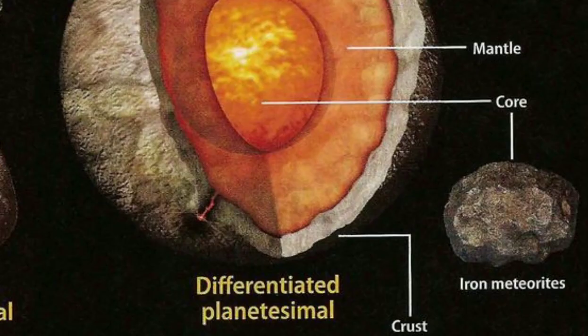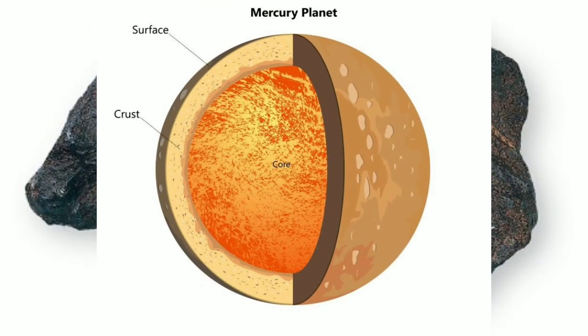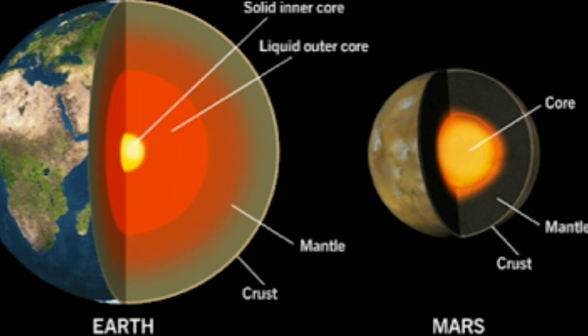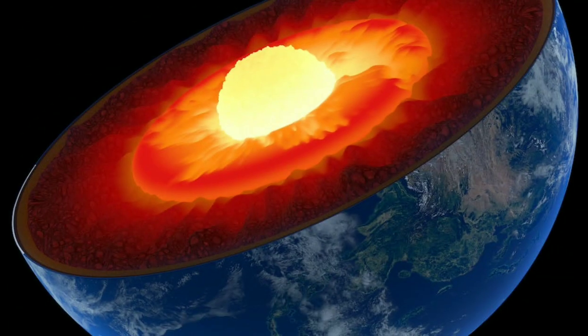Sometimes they have an iron core and concentric layers, surrounded by a silicate mantle and crust. This type of structure is very similar to terrestrial planets — Mercury, Venus, Mars and Earth — which also have metallic cores. Iron meteorites can tell us a great deal about how the metallic cores of planets form.